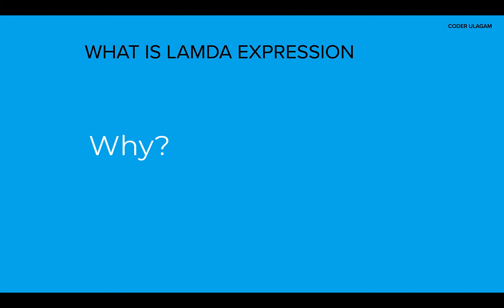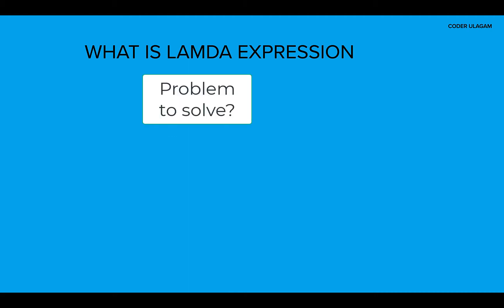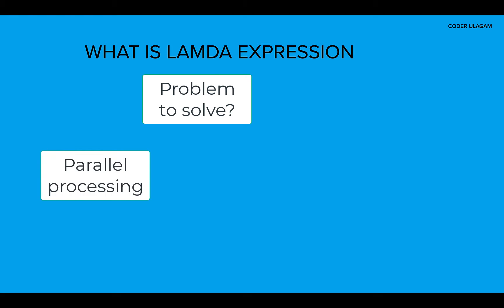Let's dive into what problems lambda solves. The functionality is going to be the same, but parallel processing is one of the main problems it solves. The latest CPUs come with multi-core processing. If you do typical Java programming by looping through each piece of logic, it won't use the multi-core processing capability of a CPU, so you need lambda expressions to do parallel processing.